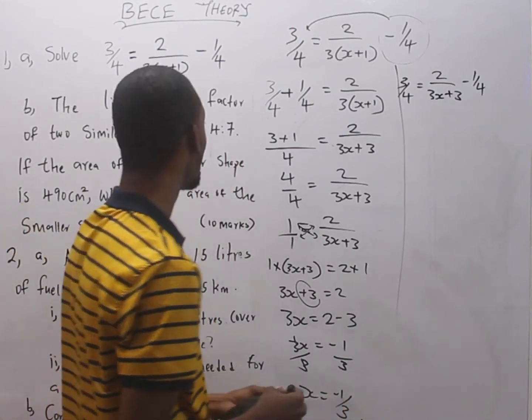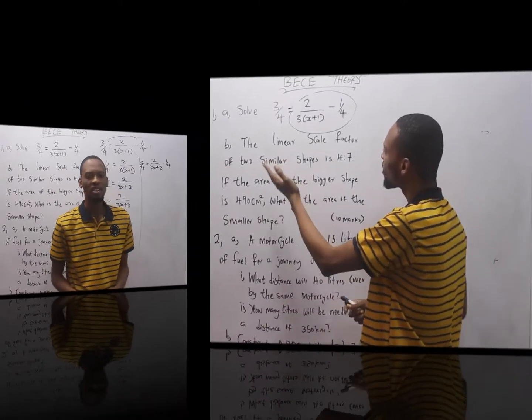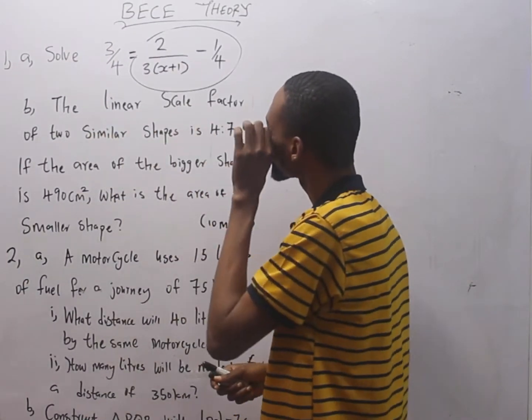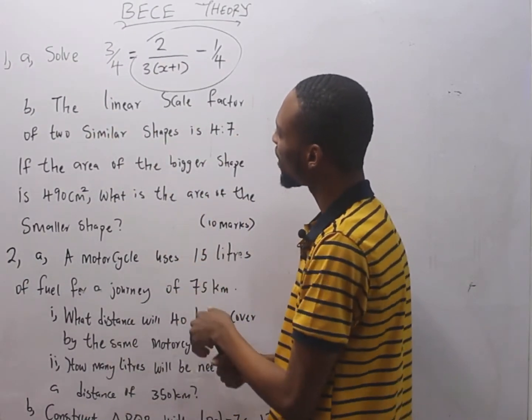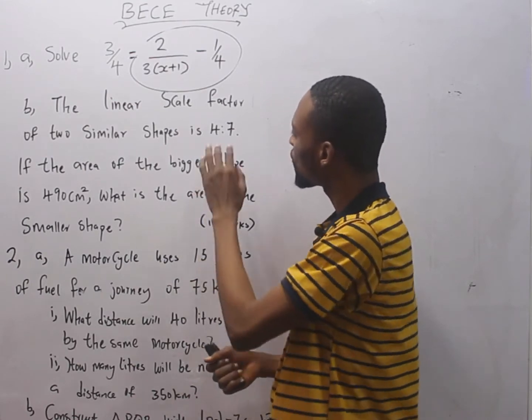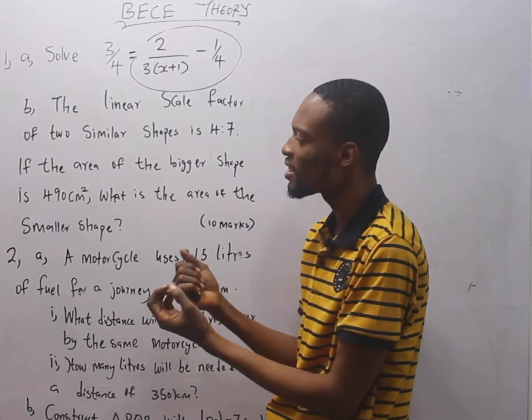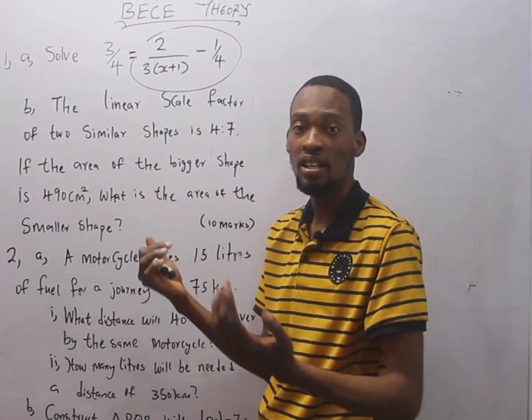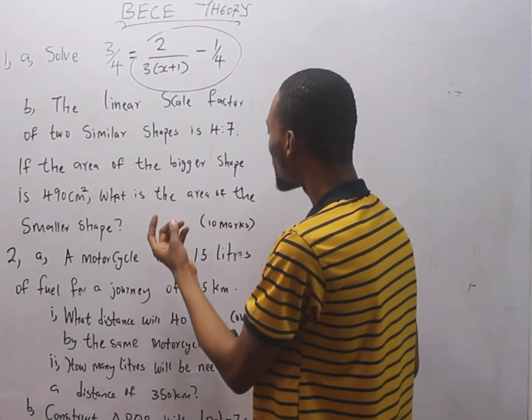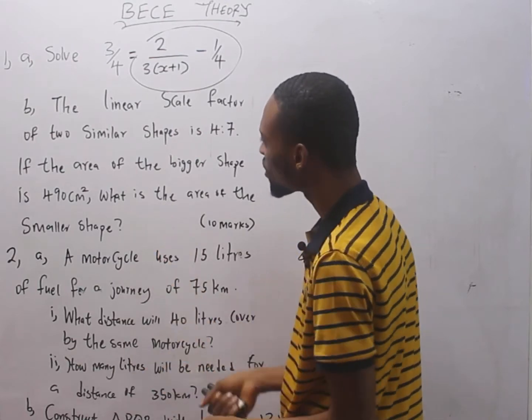In B, it says, the linear scale factor of 2 similar shapes is 4 ratio 7. If the area of the bigger shape is 490 cm squared, what is the area of the smaller shape?